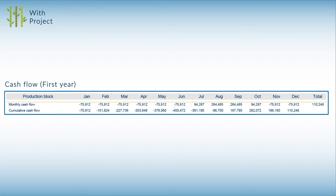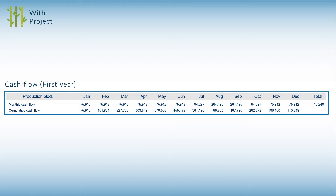Keep in mind that the amount needed for a working capital loan is estimated by selecting the largest negative number on the accumulated cash flow row for year one. In this example, it is 455,472,000 Tanzanian shillings. The length of the working capital loan is estimated by selecting the last month with a negative accumulated cash flow, plus an additional two months to provide a margin for error. In our example, the last negative accumulated cash flow occurs in the eighth month, and thus the loan duration would be 10 months.